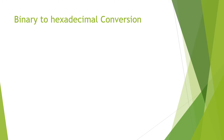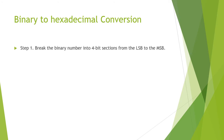The next conversion is binary to hexadecimal, and it is very simple. The first step is to break the binary number into 4-bit sections from the LSB to the MSB — LSB is the least significant bit and MSB is the most significant bit. Then convert each 4-bit binary group into its hexadecimal equivalent.